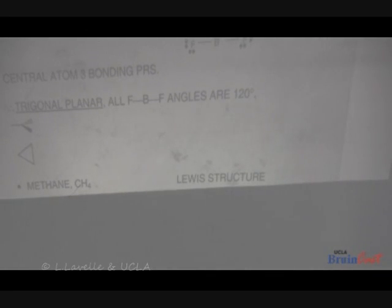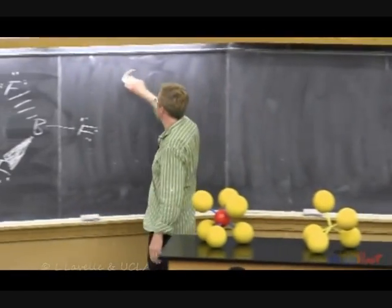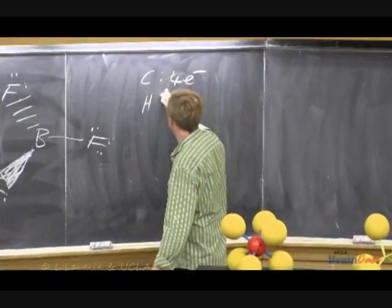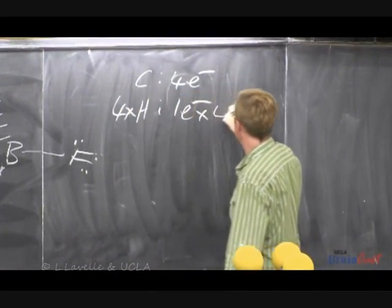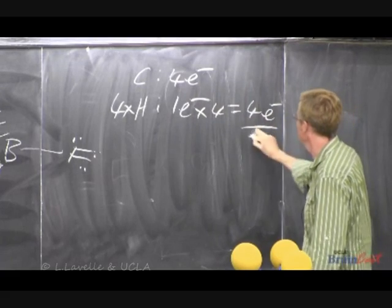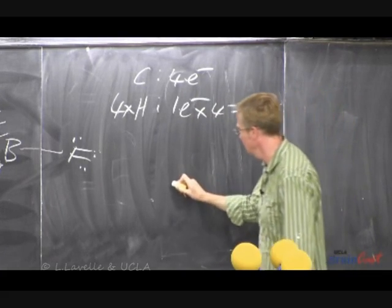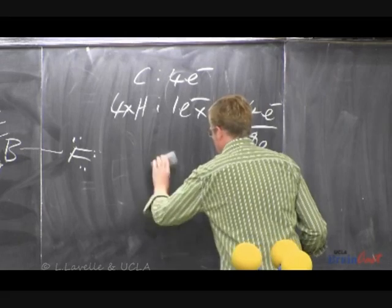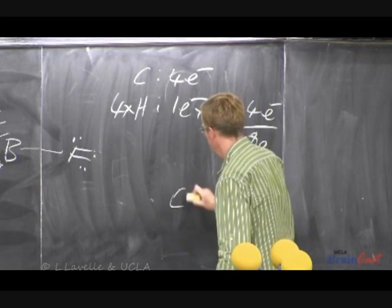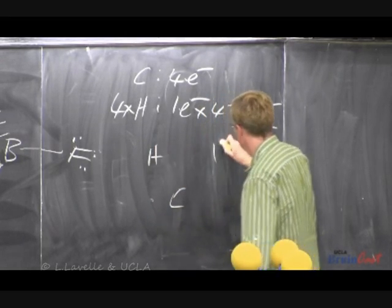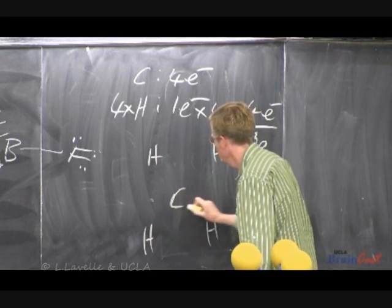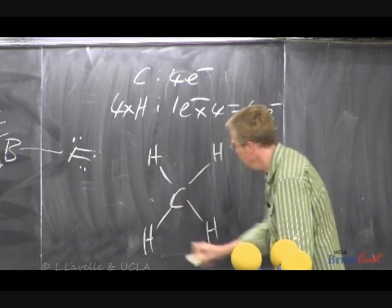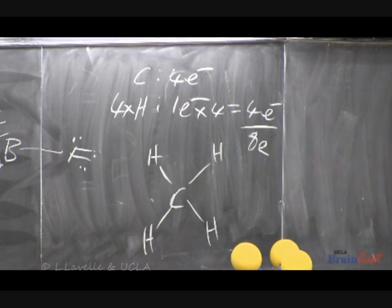How many valence electrons does carbon atom have? Four. Hydrogen, one, so we've got times four, so four plus four is eight, and hydrogen's never in the middle, so I'm going to put my carbon there, I'm going to put my hydrogen symmetrically around it, we don't yet know what the shape is, we're going to figure it out, and I'm going to put in at least one bond. How many electrons have I used? Four.